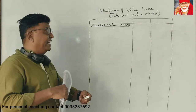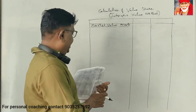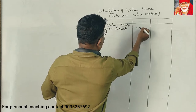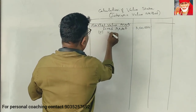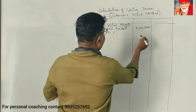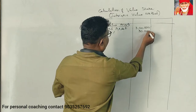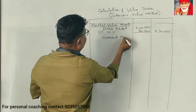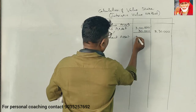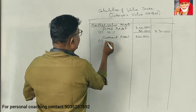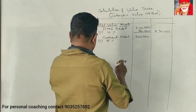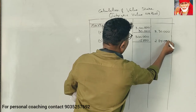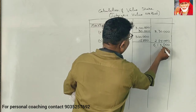This is the equity shares intrinsic value model. First, market value of assets. Fixed assets as per the balance sheet is ₹3,00,000. The adjustment is 10% more than the book value of ₹3,00,000, giving ₹3,30,000. Total assets come to approximately ₹6,00,15,000.